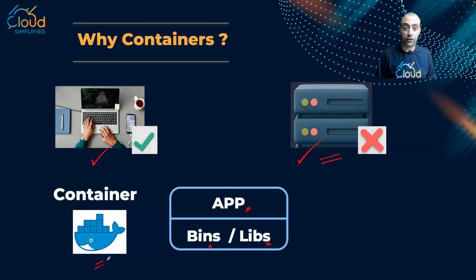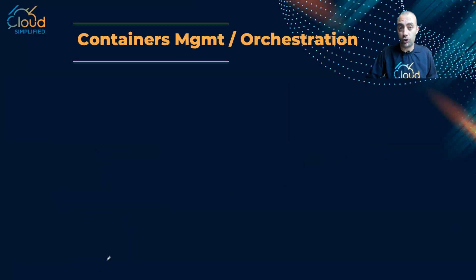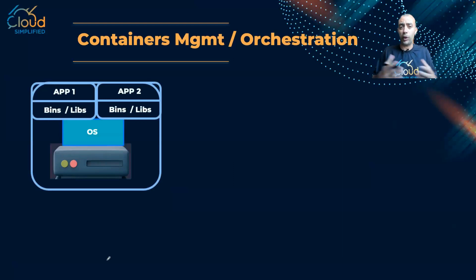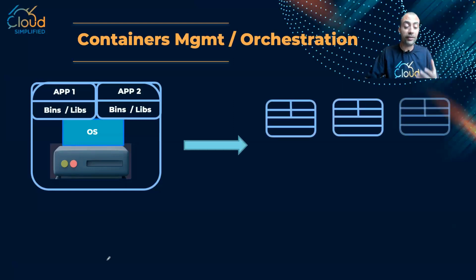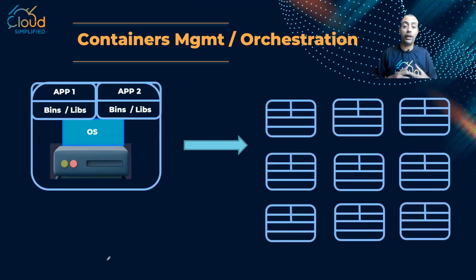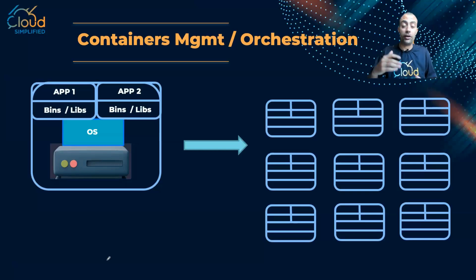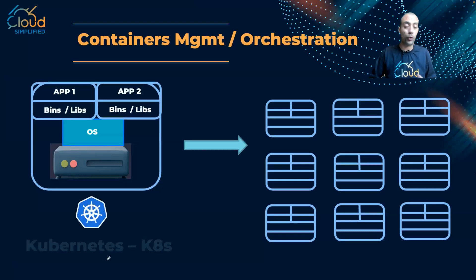The next challenge is: how do I manage and orchestrate my containers? If I'm using a testing environment on my own machine and running multiple containers, manually launching and terminating them is perfectly fine for just one machine. But in production with tens of servers and hundreds of containers, managing them manually is very challenging. That's why I need an orchestration layer — and here comes Kubernetes.